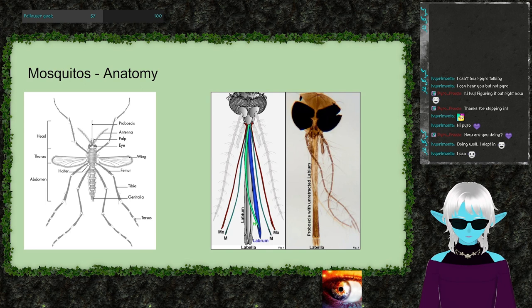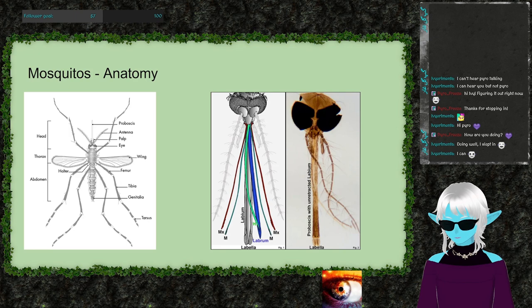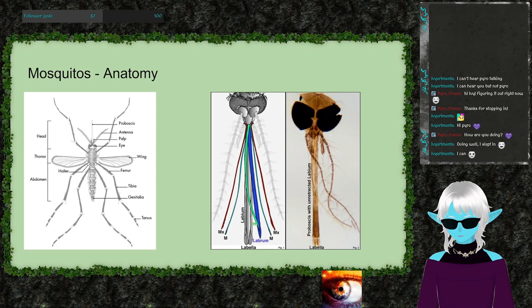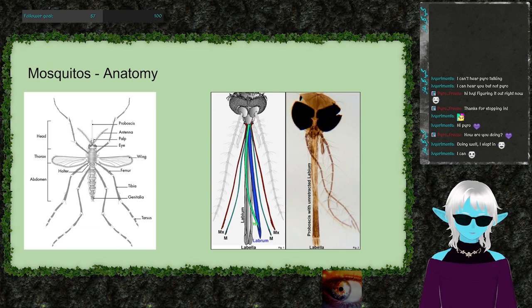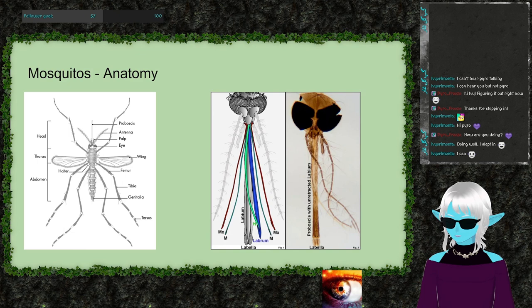Female mosquitoes have six distinct parts making up their proboscis, each serving a different function. The labrum appears sharp and likely punctures the skin. Other parts introduce saliva containing anticoagulants to keep the blood flowing. There may also be an anesthetic component that delays the host's awareness of being bitten, which is advantageous since a felt bite would cause the host to swat the mosquito away.